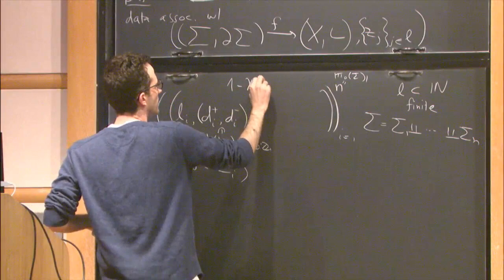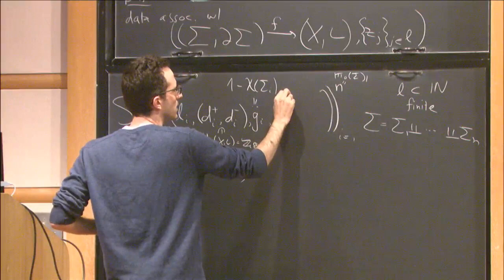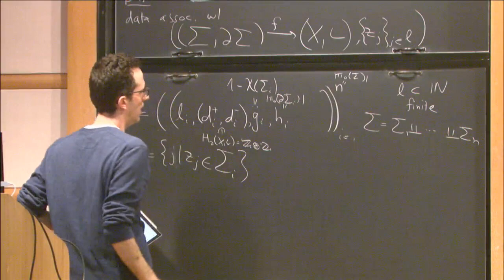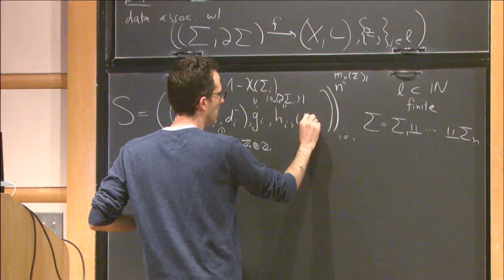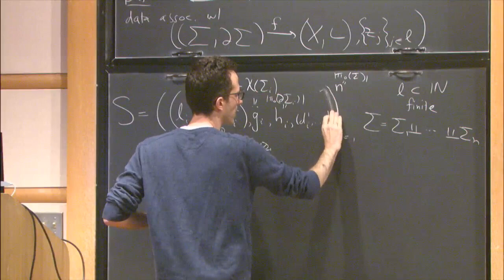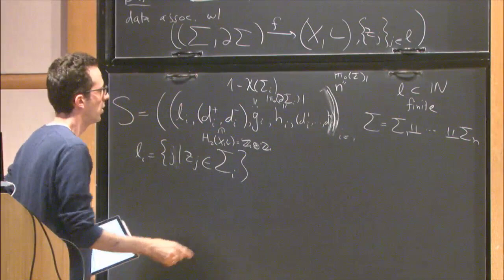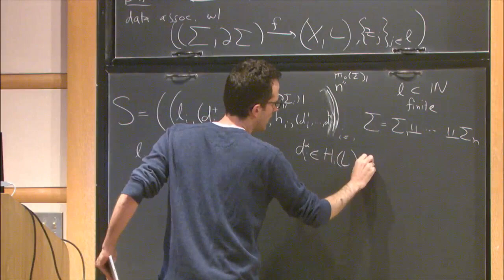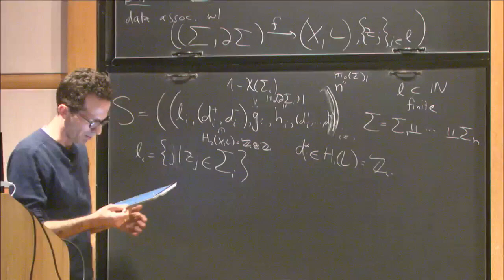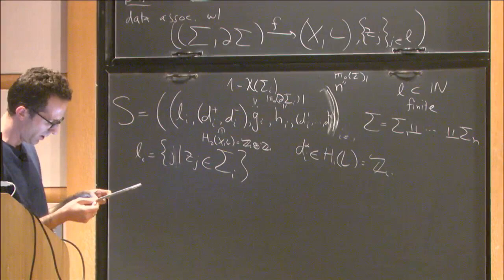These integers are non-negative for holomorphic maps. We have the genus, which by definition is 1 minus the Euler characteristic of the i-th piece. We have the number of boundary components of the i-th component. And we have the boundary degrees: each d_{i,alpha} is some element in the first homology of L, specifying the degree of the alpha-th boundary component.